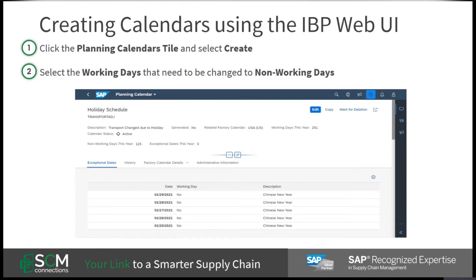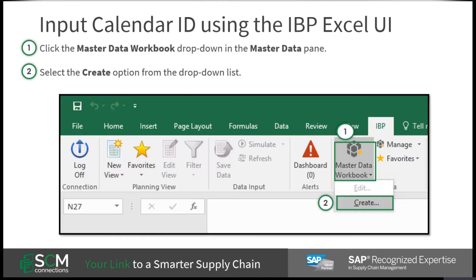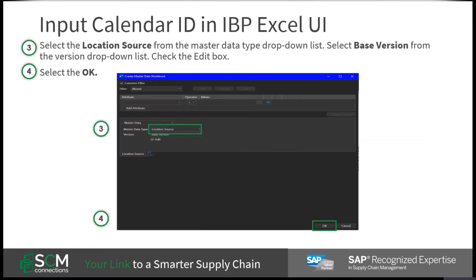Now a planner must assign the newly created calendar to their network's master data. To do this, click the Master Data Workbook drop down in the master data pane. Select the create option from the drop down list. Then select the location source from the master data type drop down list and select base version from the version drop down list, and ensure that you click the edit box. Then press OK.